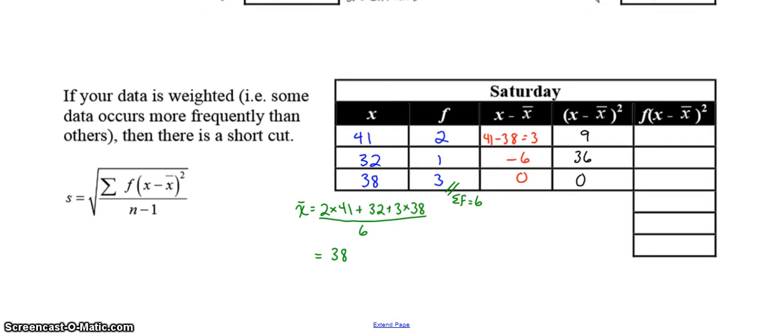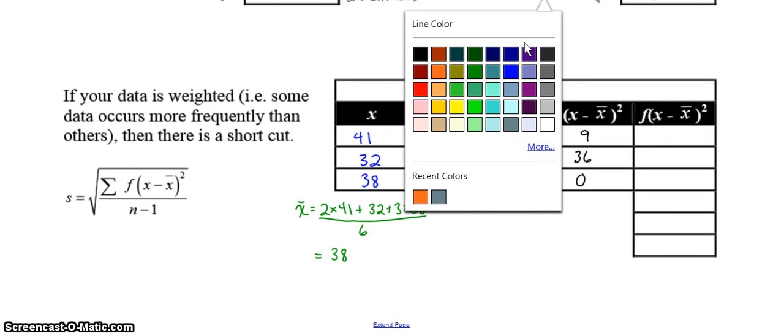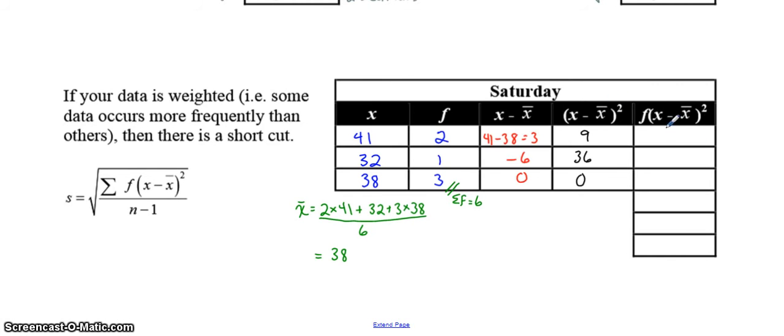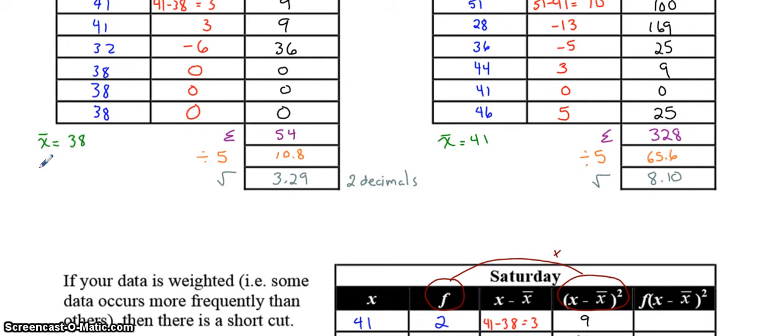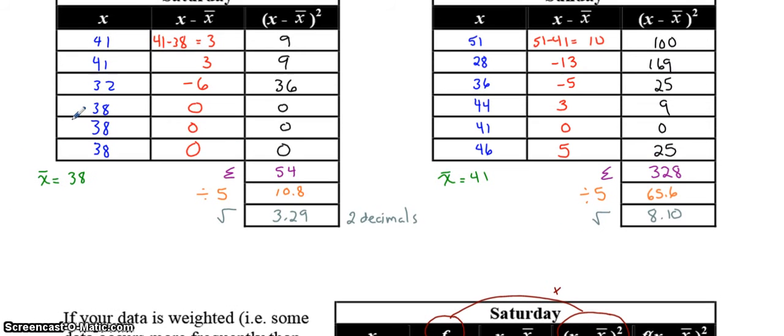Now, what you do is you add this extra column. And what you're going to do is take the deviation squared. So you're going to take this column and you're going to multiply it by the frequency, because that 9 occurred twice and the 0 occurred three times.